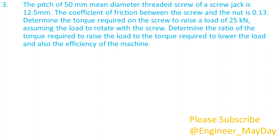Here is a third question. The pitch of a 50 mm mean diameter threaded screw of a screw jack is 12.5 mm. The coefficient of friction between the screw and the nut is 0.13. Determine the torque required on the screw to raise a load of 25 kN, assuming the load rotates with the screw. Determine the ratio of the torque required to raise the load to the torque required to lower the load, and also the efficiency of the machine.